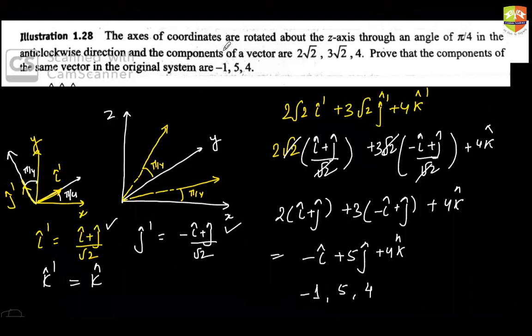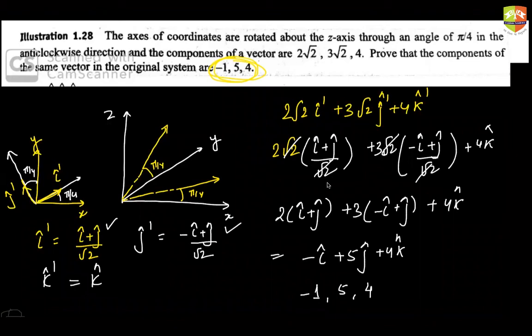So the components of the vector in the original coordinate system are -i + 5j + 4k, which is what we were asked to find. The key concept here is understanding how the unit vectors change when you rotate the xy-axes 45 degrees anti-clockwise.